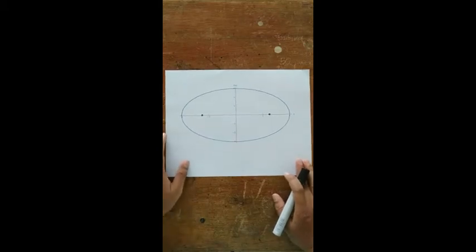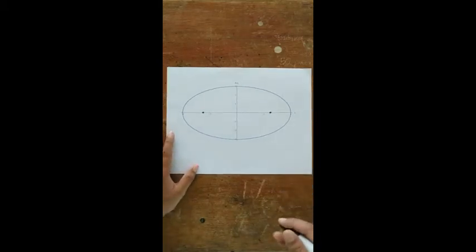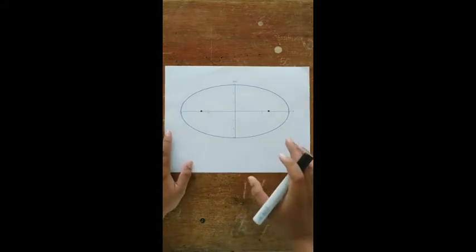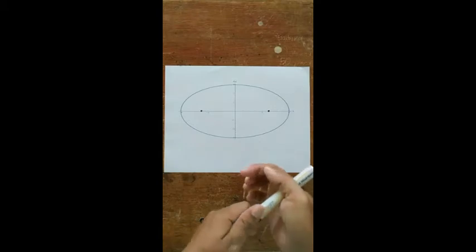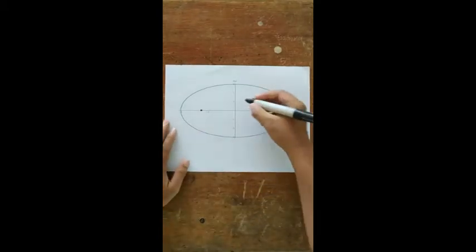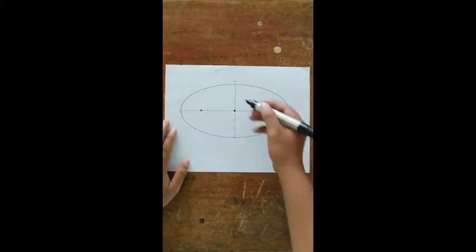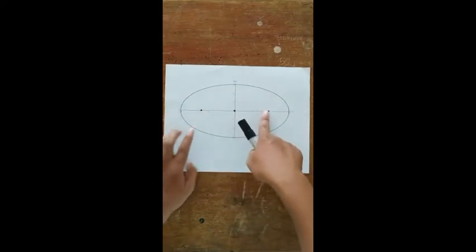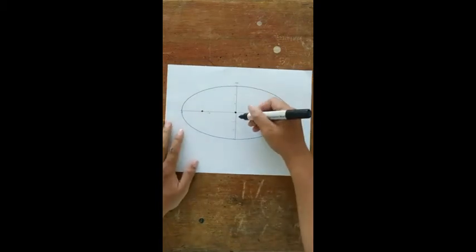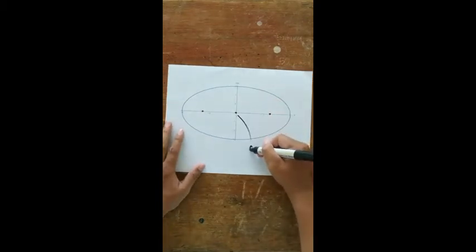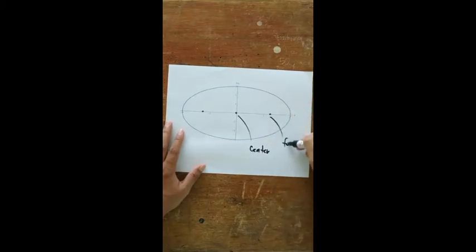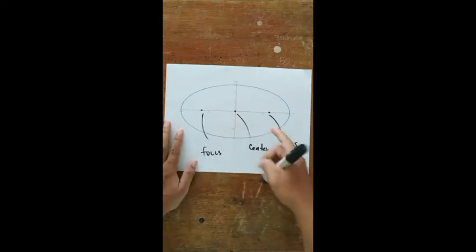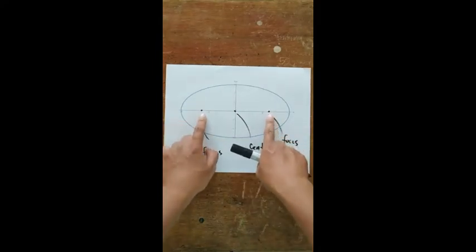Our lesson for this day is all about ellipse. Before we start discussing ellipse, we need to know the basic parts. In an ellipse, we have a center, and we also have a focus — let me label them. We have the center, and then we have the foci — two foci.